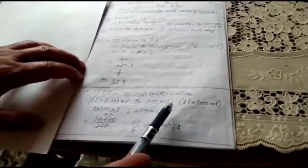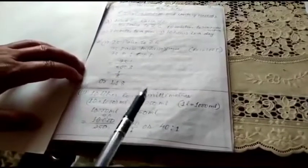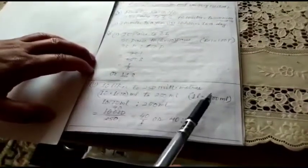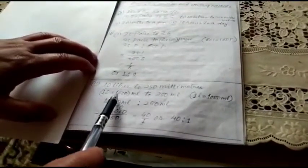Next part: 10 liters to 250 milliliters. Here again, one is in liter, the other is in milliliter. Let's convert into milliliters. 10 liters—one liter equals 1000 milliliters, so 10 liters means 10 into 1000, which is 10,000 milliliters.